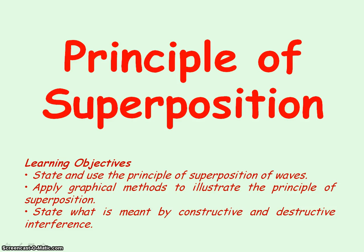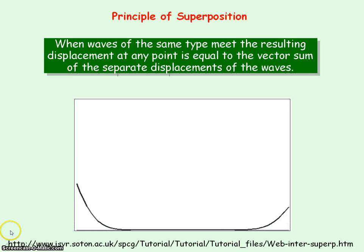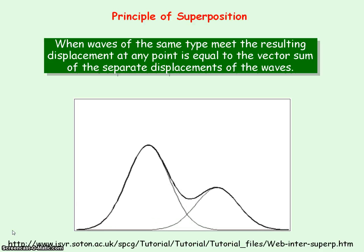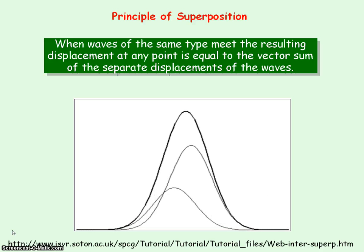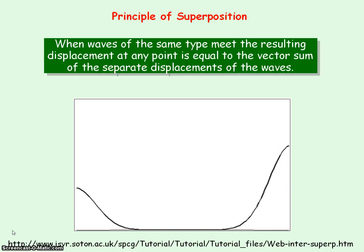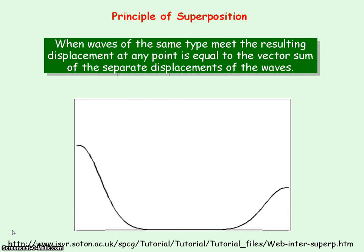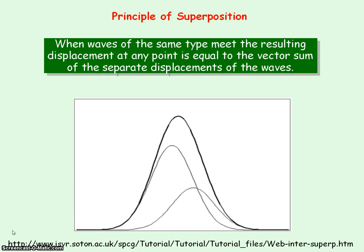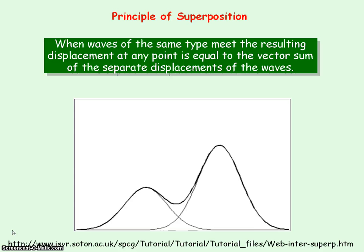We're going to be looking at the principle of superposition. When two waves are the same type — meaning they're both radio waves, or both light waves, or both sound waves — and these waves meet, the resulting displacement at any point will equal the vector addition of the separate displacements of the waves.